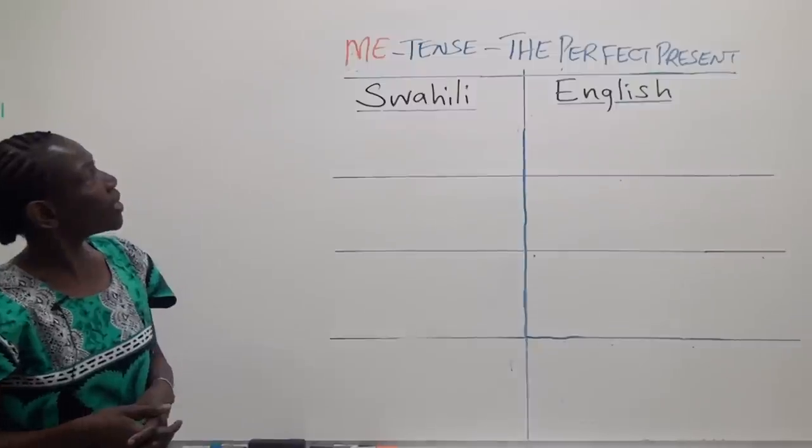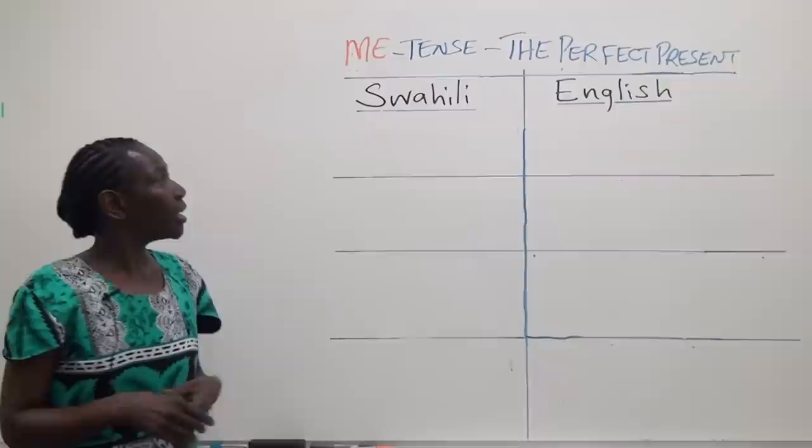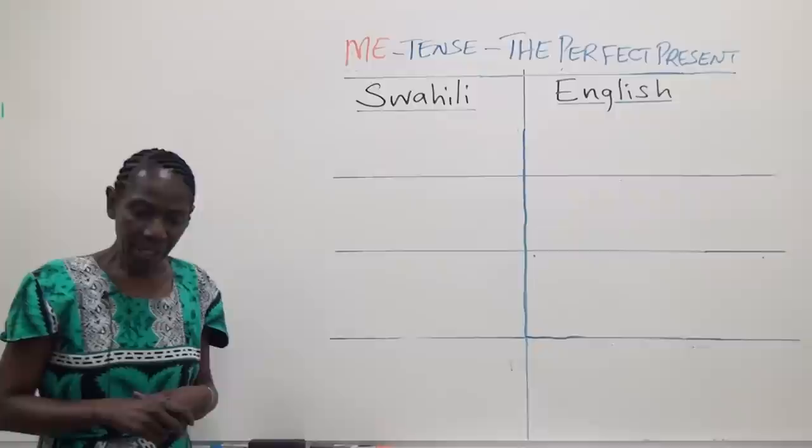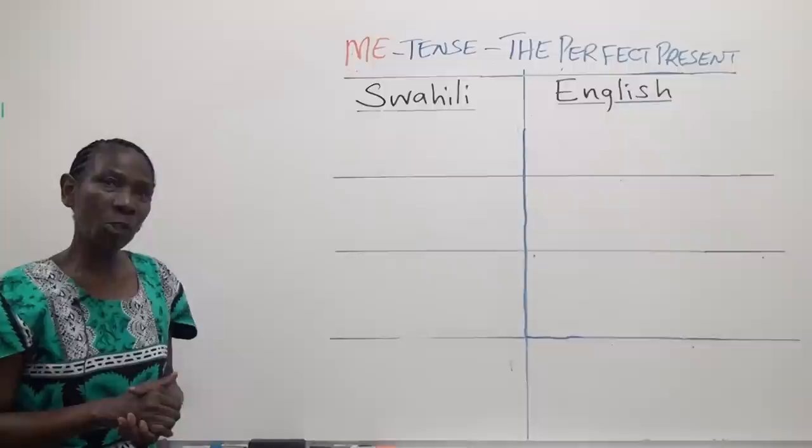We want to look at the ME tense, which is the perfect present in English. The perfect tense ME is equivalent to the English present perfect — 'have' or 'have done something.' In Swahili, the perfect tense ME expresses an accomplished or completed act or action.